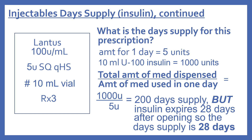Example: Lantus 100 units per ml, 5 units subcutaneously every night at bedtime, dispense a 10 ml vial, refill times 3. The amount for one day is 5 units. A 10 ml vial of U100 insulin equals 1,000 units. So 1,000 divided by 5 equals a 200-day supply — but since insulin expires 28 days after opening, the day supply for this prescription would be 28 days.